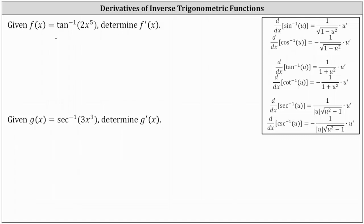We are given f of x equals inverse tangent of 2x to the fifth and asked to determine f prime of x. Notice how we do have a composite function where the inner function, often referred to as u, is 2x to the fifth. So if we have u equal to 2x to the fifth, when applying the chain rule, we need to determine du/dx or u prime, where u prime equals 10x to the fourth.